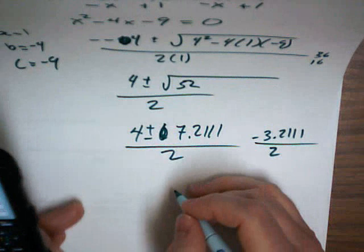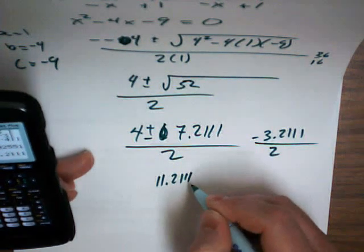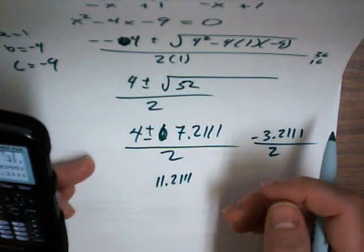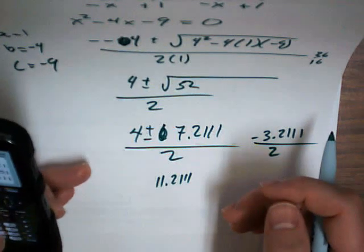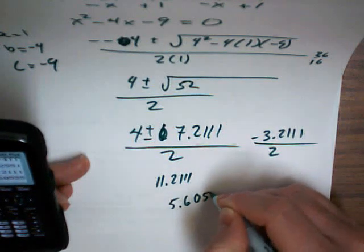But I could possibly use the positive. 4 plus 7, that's 11.2111. So 11.2111 divided by 2 is 5.6055.